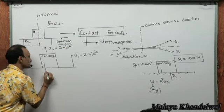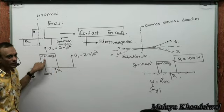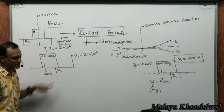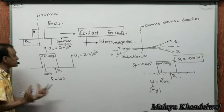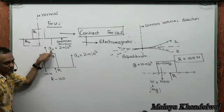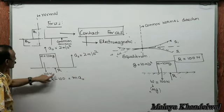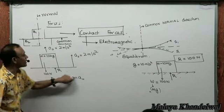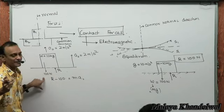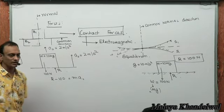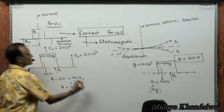The mass is not in equilibrium — it is accelerated. By Newton's second law, the net vertical force equals mass times acceleration: R minus 100 = M × A₀ = 10 × 2 = 20. So R = 120 newtons. Notice R is not equal to the weight in this case.